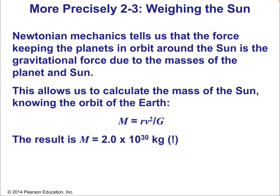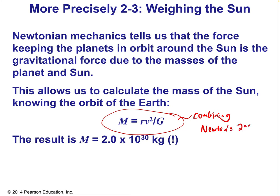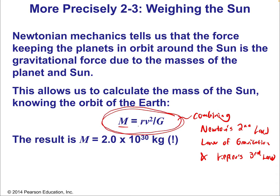Now we actually have a reason why there are orbits — it's due to the masses of the planet and the sun and the gravitational attraction between any two masses. This allows us to calculate the mass of the sun knowing the orbit of Earth. We can combine Newton's second law, the law of gravitation, and Kepler's third law to find the mass of the sun based on the radius of Earth's orbit, the velocity of Earth around the sun, and the gravitational constant.